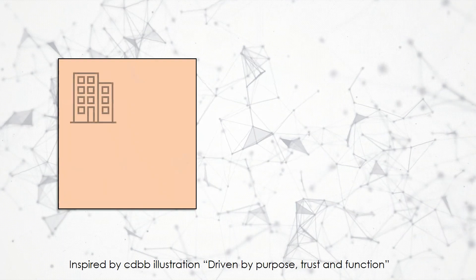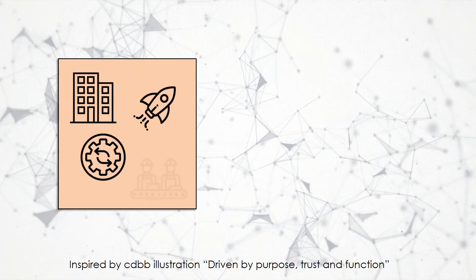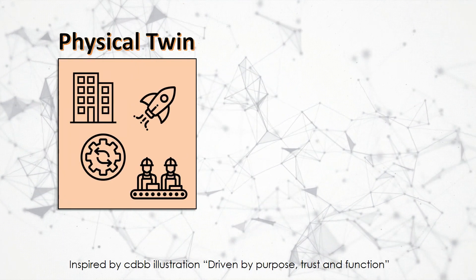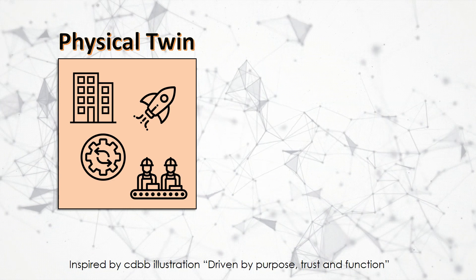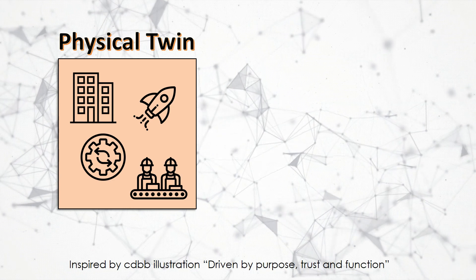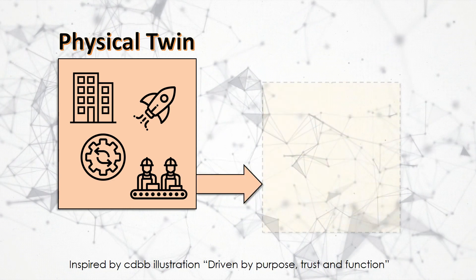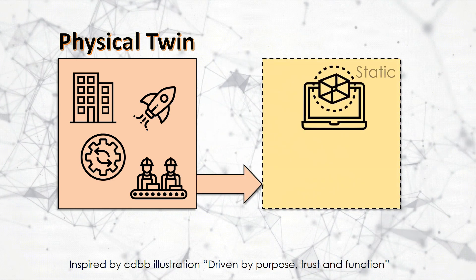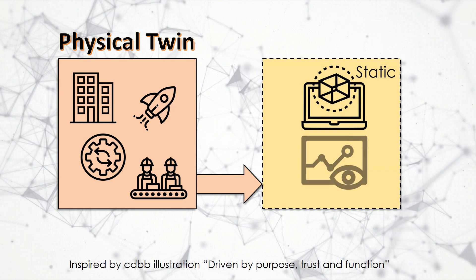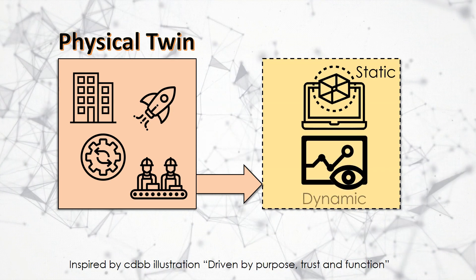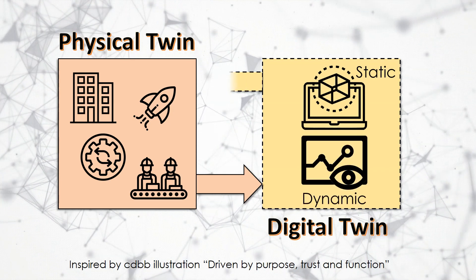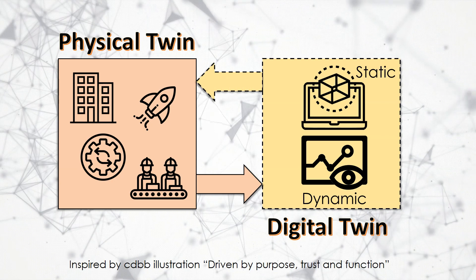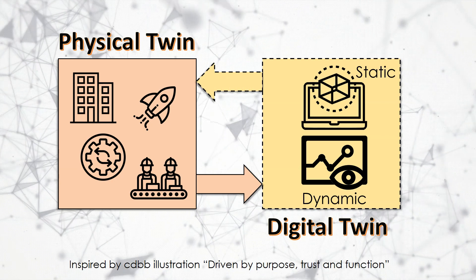On one side, there is a physical object, system or process, which is the physical twin. And on the other side, there is a digital imitation that contains static and dynamic data, analysis and visualization of the data from the physical twin.